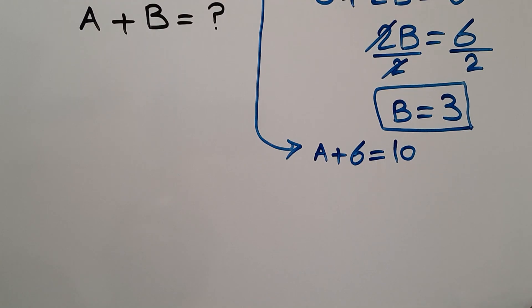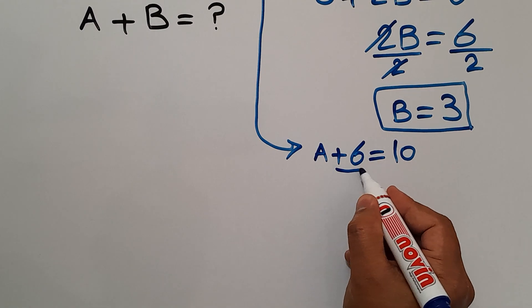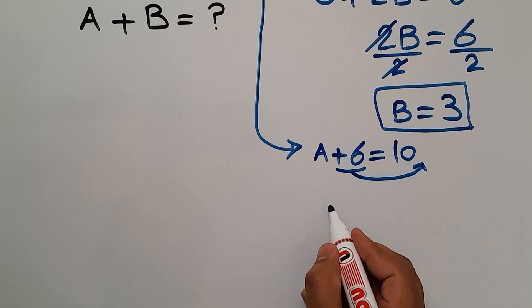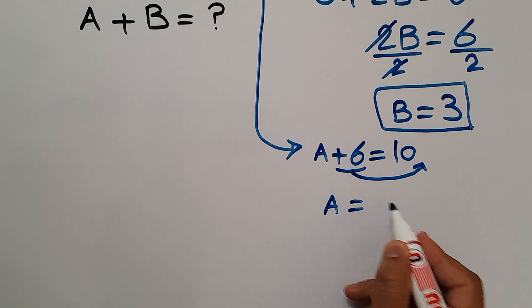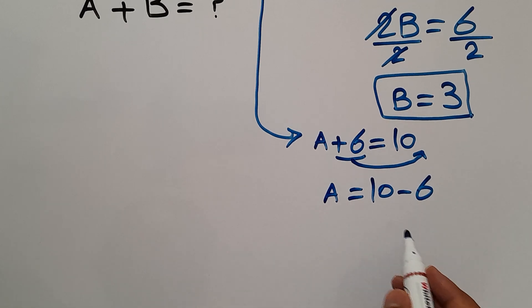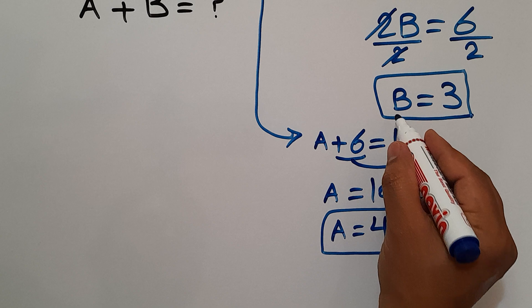Now let's move this value plus 6 to the right hand side, so we have A equals 10 minus 6, and 10 minus 6 equals 4. So A is 4.